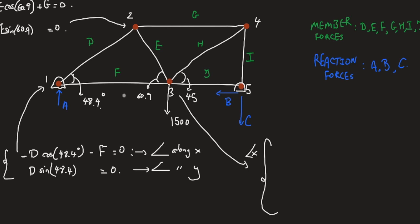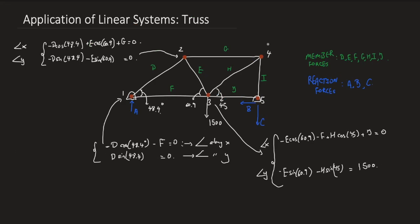Same thing on pin three. Project along x first. You're going to have components coming from F, E, H, and J, so we get minus E cosine 60.9 minus F and H cosine 45 and J cosine zero, so plus J, equal to zero. Pay attention, there is a force on pin three, but since this force is perpendicular to the x-axis, it does not contribute because cosine 90 is zero. Now projection along y: minus E sine 60.9, F does not contribute because sine 180 is zero, then minus H sine 45, and J does not contribute. This is all equal to 1500 because 1500 fully projects.